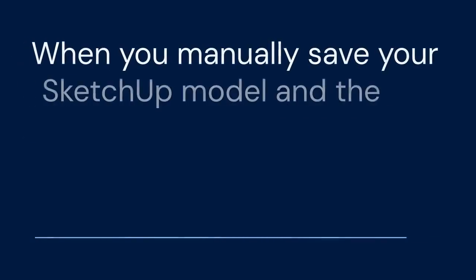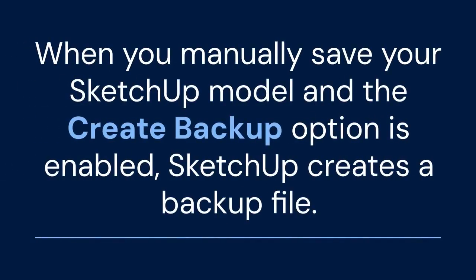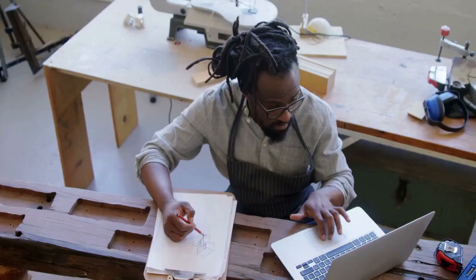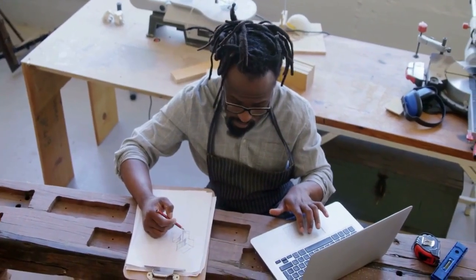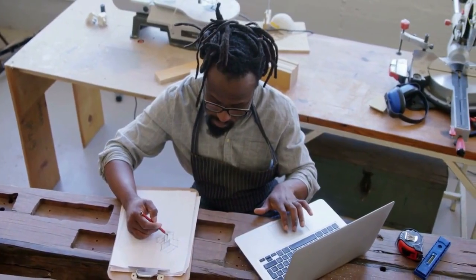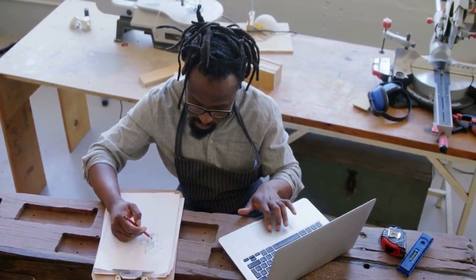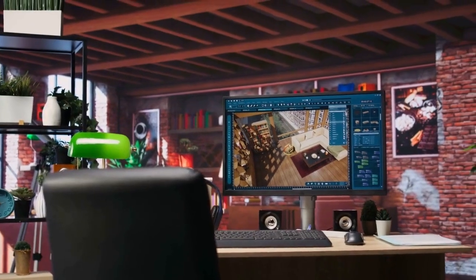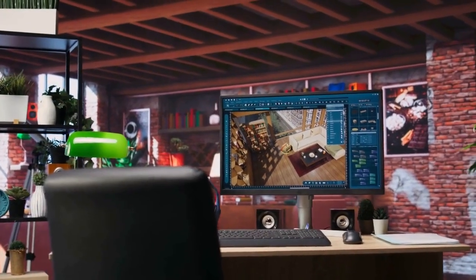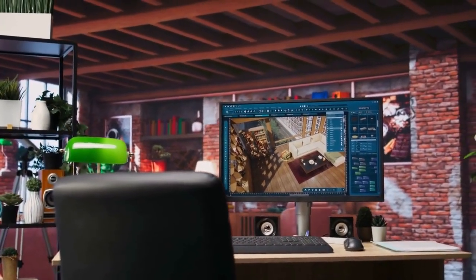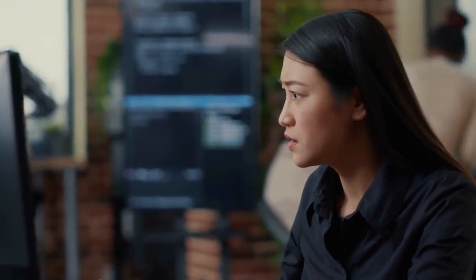Another helpful tip is to look for backup files. When you manually save your SketchUp model and the Create Backup option is enabled, SketchUp creates a backup file. This backup file usually has the same name as your SketchUp file, but with a .skb extension instead of .skp. To open a backup file, simply rename it to have a .skp extension, and then open it in SketchUp. This backup represents the last manually saved version of your model.